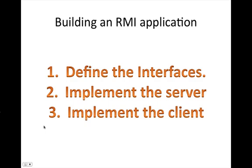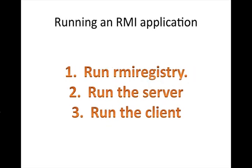Building an RMI application is quite straightforward. First, define the interfaces of the objects you're going to host on a remote process. Then implement those interfaces — these are the object implementations the server will host. Finally, implement the client code that actually accesses those remote services. To run it, also a three-step process: first run the RMI registry, then run the server which registers with the registry, and finally run the client which connects to the registry to locate the server.